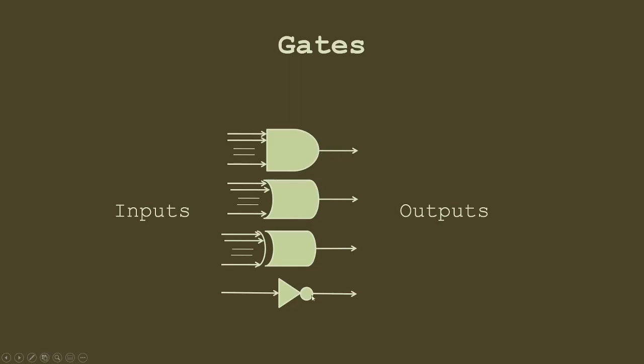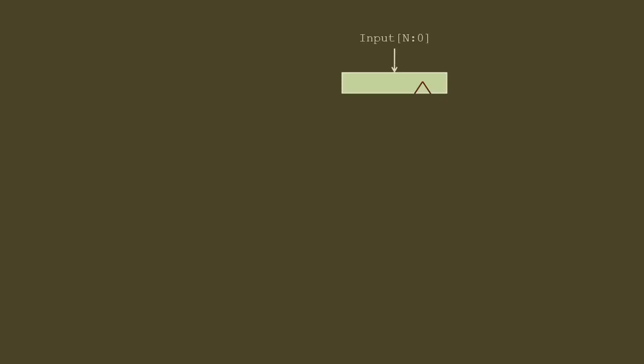The next thing we use is a register. A register can store bits - normally it has an N-bit input and N-bit output, and it stores that input for one clock cycle. Clock is generally a signal oscillating one-zero-one-zero. We normally work on the rising edge of a clock - when the transition is from zero to one - or the falling edge, when the transition is from one to zero. Most circuits work on rising edge.